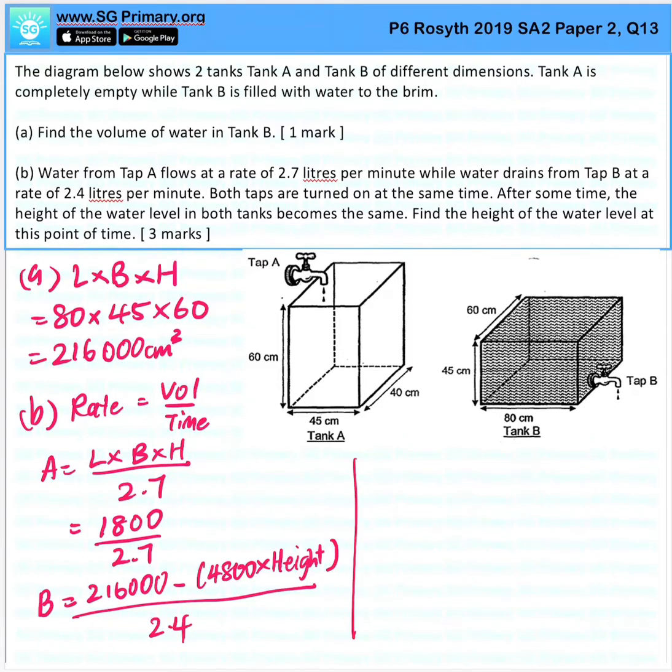They say that both tanks became the same height. At one point in time, both were the same, which means this was equal to this. Let's put the two equations together.